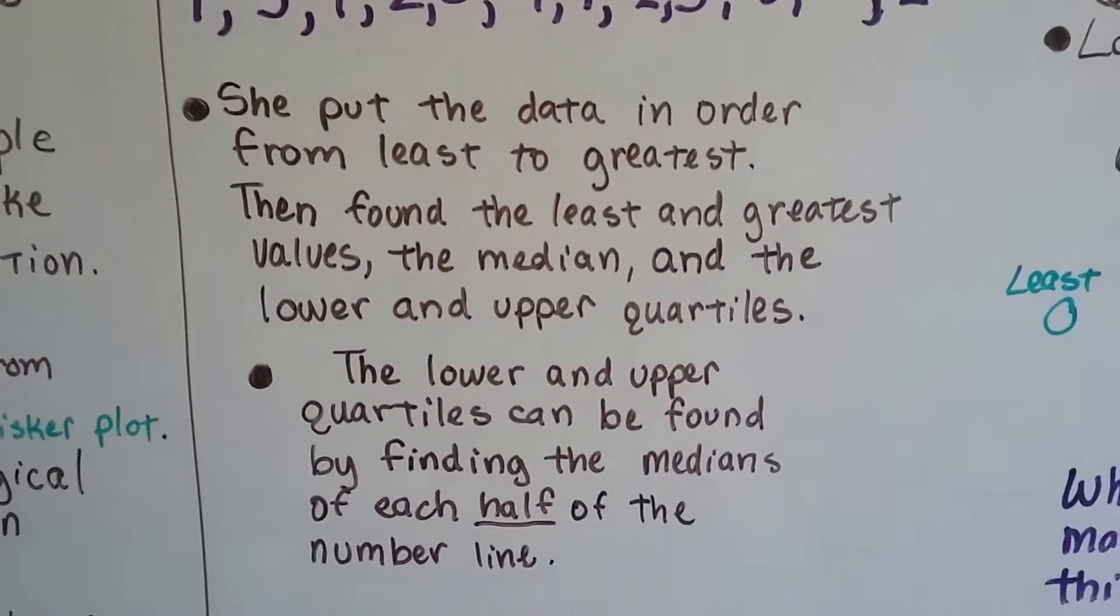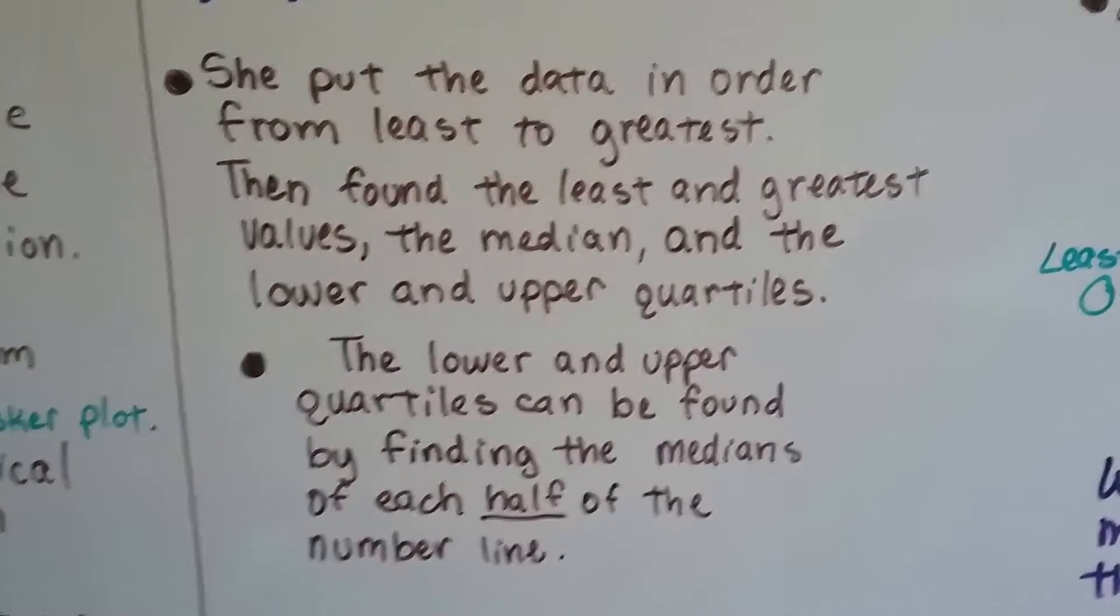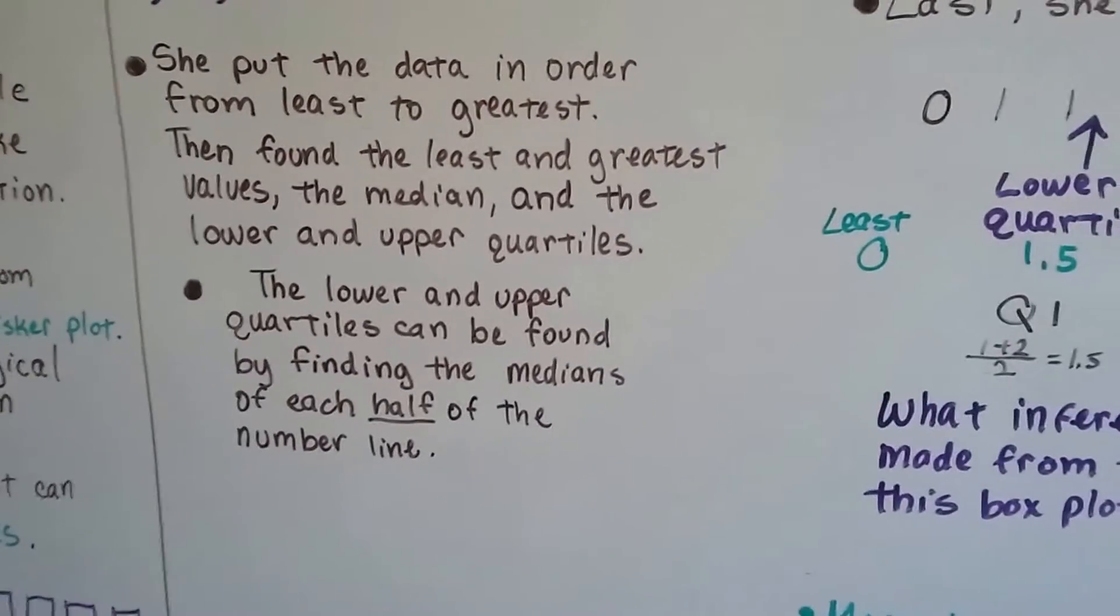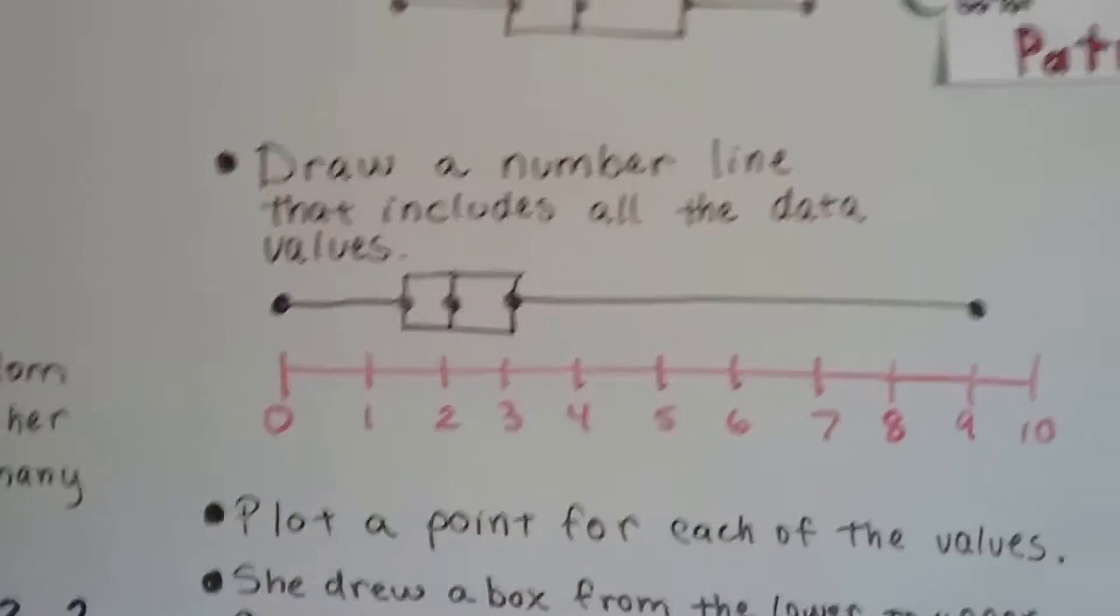Then found the least and greatest values, the median, and the lower and upper quartiles. The lower and upper quartiles can be found by finding the medians of each half of the number line. So this is what it ends up looking like.